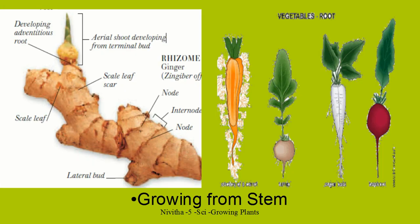A new plant can also grow from other parts of the plant. For example, in ginger — this is a rhizome ginger. Here you have a bud, a lateral bud, a scale leaf. And from this bud it is developing into a shoot — an aerial shoot is developing. This is the scale leaf, the lateral bud, and here is a node. From every node and from every bud, a new shoot will come up and grow into a plant. This is ginger.